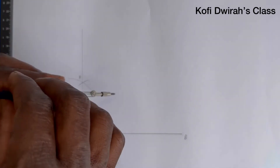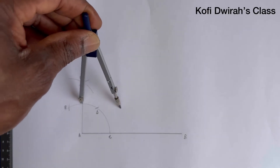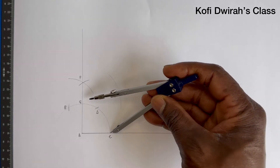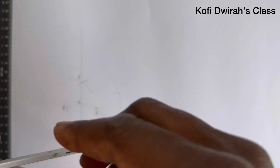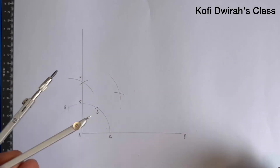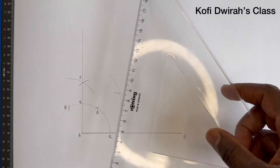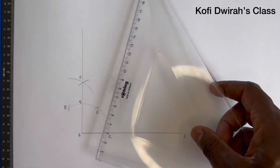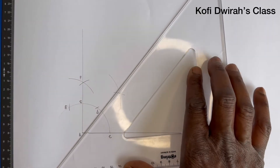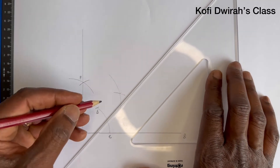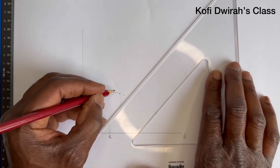This point is point G. At point G, you open your compass to any radius, then you draw an arc. Then at point C you draw another arc. Then we are going to draw our 45 degrees angle, so here with your set square you draw a faint line.